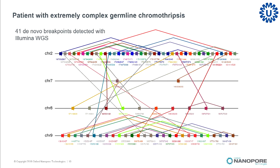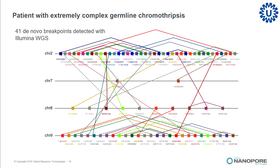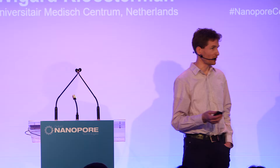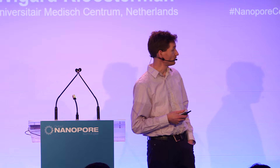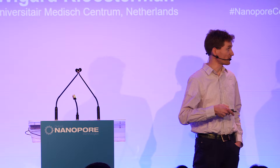We started sequencing a single human genome, and thought it would be appropriate to sequence a genome with a very complex rearranged chromosome — this chromothripsis. We started sequencing in April 2016 using native DNA extracted from blood and also from renal kidney cells obtained from urine of this patient, which we could culture to obtain a bit more DNA. In April we still started with some R7 chemistry in our very first runs, then later switched to R9, and finally topped it off with some R9.4 flow cells.